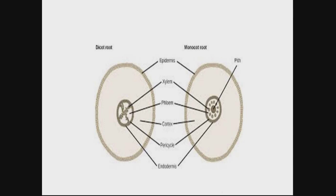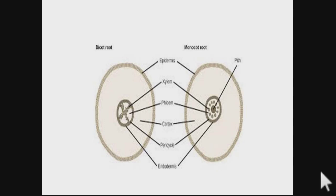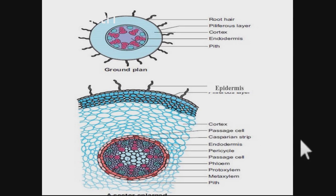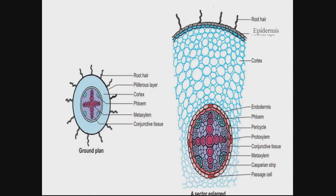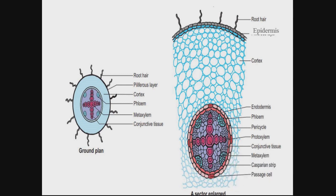There is no secondary growth in monocot root. Another difference: pith is usually absent in dicot root, while monocot root has a well-defined pith. Conjunctive tissue is parenchymatous tissue present between the xylem and phloem, and these parenchymatous cells are called conjunctive tissue. So we have now discussed both dicot root and monocot root.